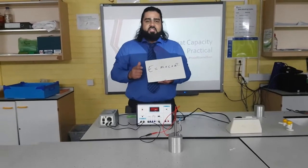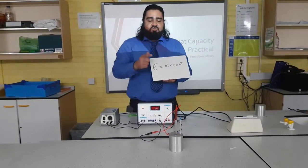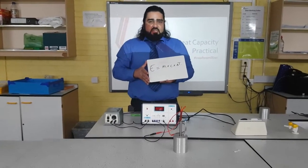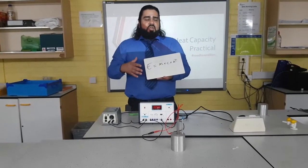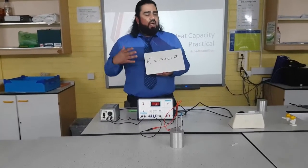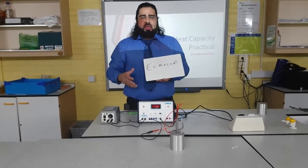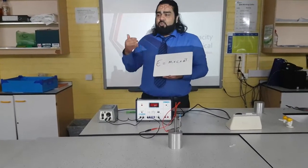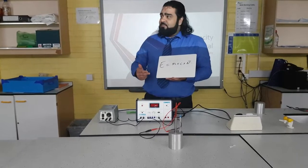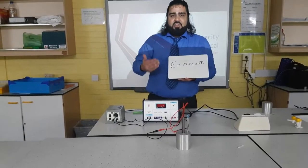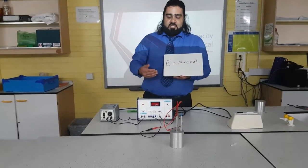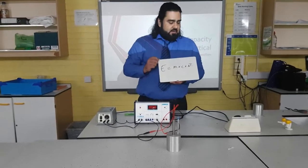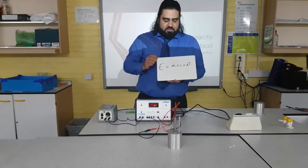Our change in temperature we're going to record using the thermometer. So it's important before you start the experiment to record the initial temperature. Once you have the initial temperature we can go to a delta T of whatever you want — I'm going to stick to a change of 10 degrees. So if my starting temperature is 23 degrees, I'm going to stop at 33 degrees, giving me a change of 10 degrees Celsius.